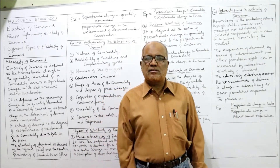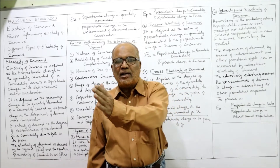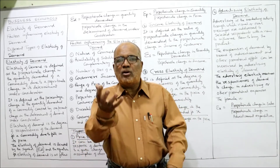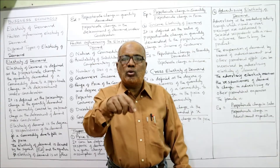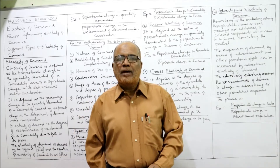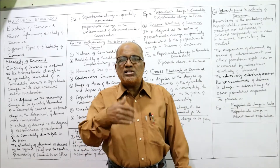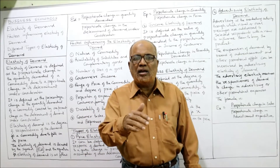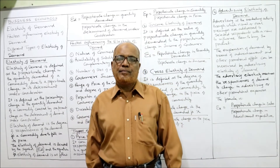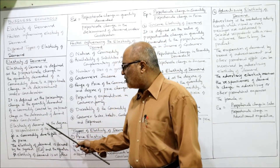For example, if price is the determinant: when price changes, the quantity demanded changes correspondingly — what is the percentage change in quantity demanded due to a 1% change in price? Similarly, another determinant is income: if there is a 1% change in income, what would be the percentage change in demand? That is called elasticity of demand.